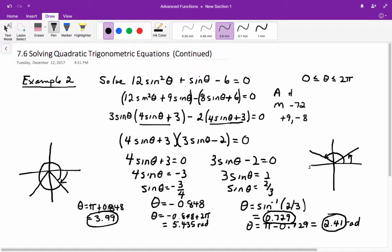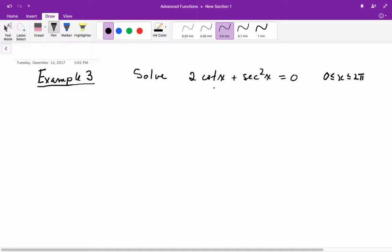Example 3 here, we have some reciprocal trig functions. One of the things you might have noticed in the first two examples is it's important, if you can, to get everything in terms of a single trig ratio: sine, cosine, tan, etc.